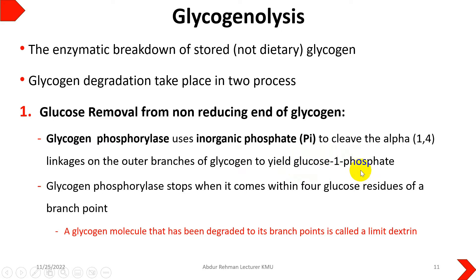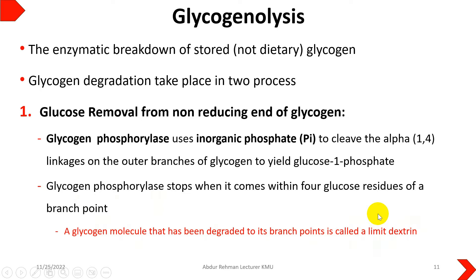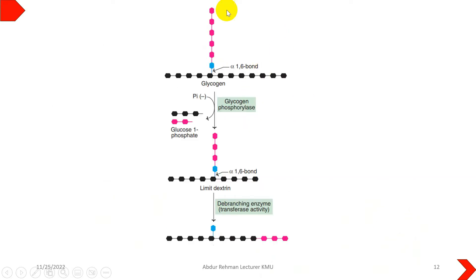If the body needs ATP in the muscles, glucose-6-phosphate goes to glycolysis; otherwise it goes to glucose production via phosphoglucomutase. When glycogen phosphorylase reaches within four glucose residues of a branch point, it degrades the alpha 1,4 linkage. When it reaches the alpha 1,6 branch point, it stops. A glycogen molecule degraded to its branch point is called a limit dextrin.